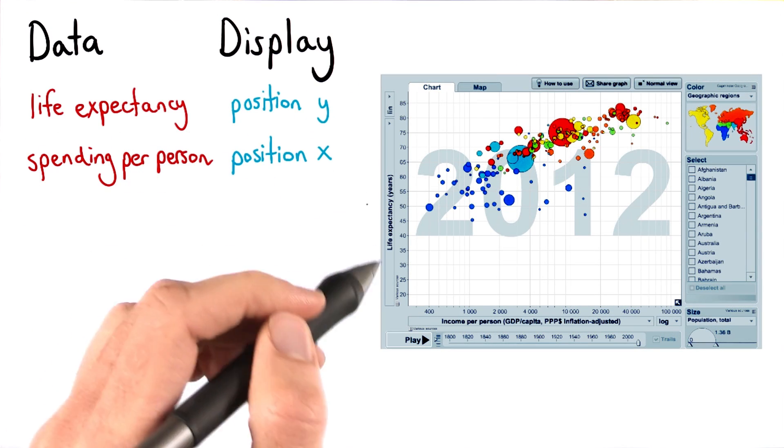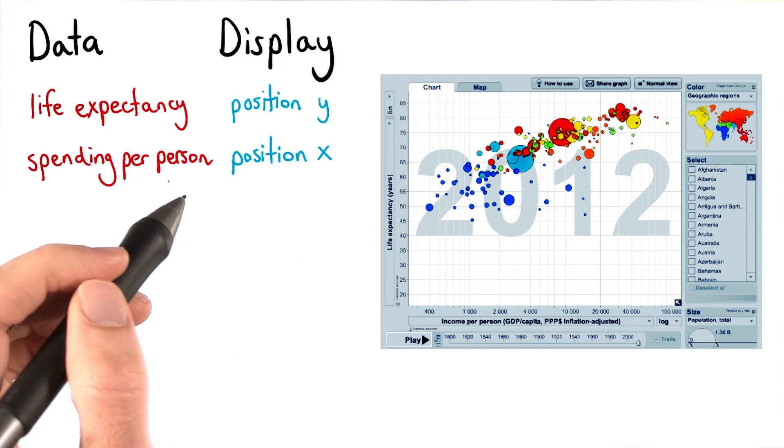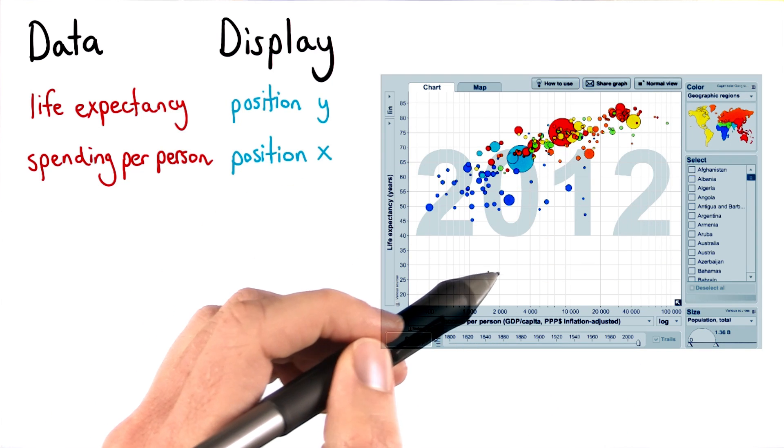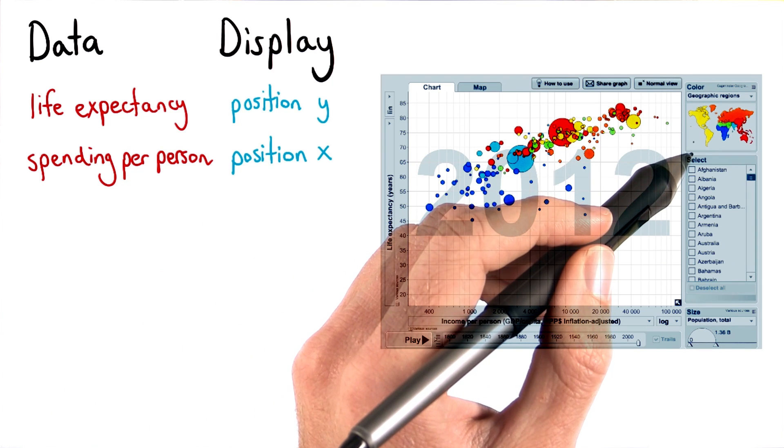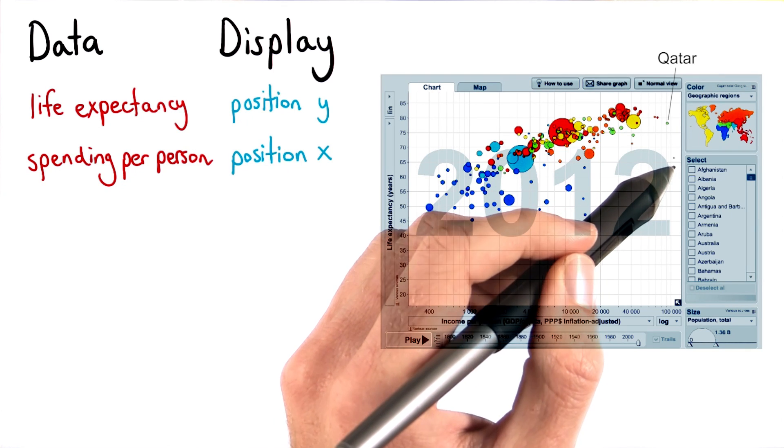Life expectancy is encoded visually along the y-axis, while spending per person is encoded along the x-axis. For a data visualization, this means that countries that are located in the top right corner of the graph, like Qatar, have a high income per person and high life expectancy.